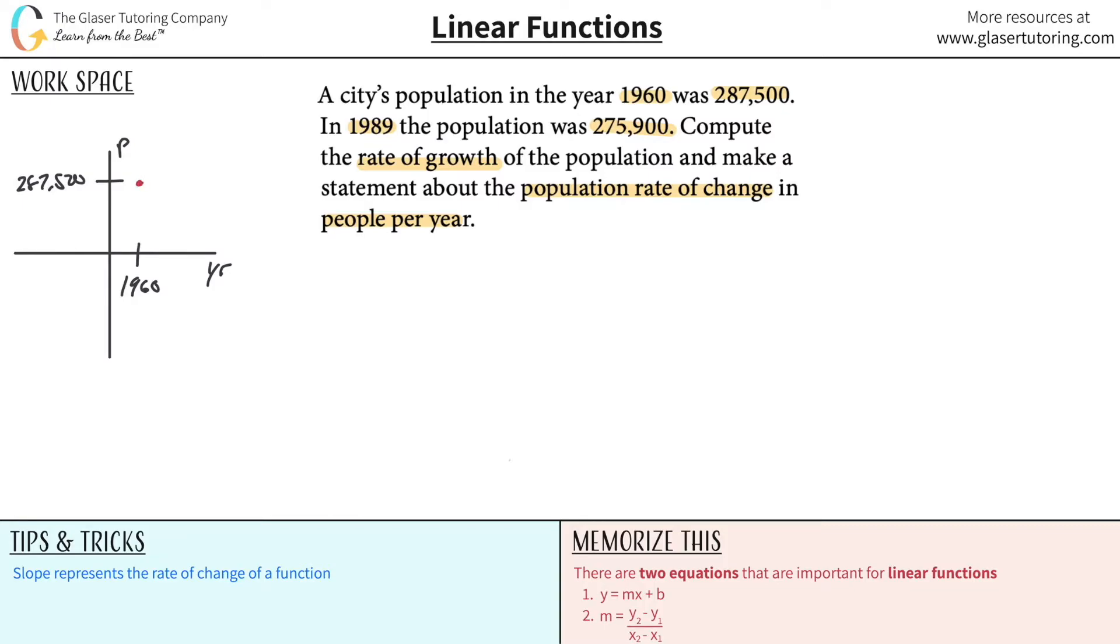And then in the year 1989, so let's say that this is about the year 1989, the population is now, what did they say? It's a little lower, 275,900. So let's plot that point where those two would intersect.